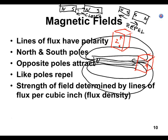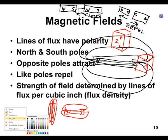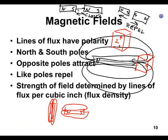Wherever the lines of flux are more concentrated, that's where the magnet will be strongest. So if I have a magnet here with lines of flux spread out, and the same magnet with lines of flux concentrated at the poles, I can pick up more paper clips at the poles — even though it's the same magnet — because the lines of flux are concentrated.